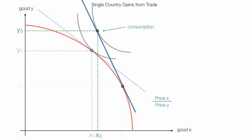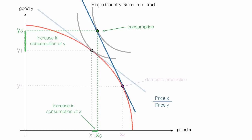The country will increase its consumption of both good Y and good X. It will decrease production of good Y and increase production of good X.